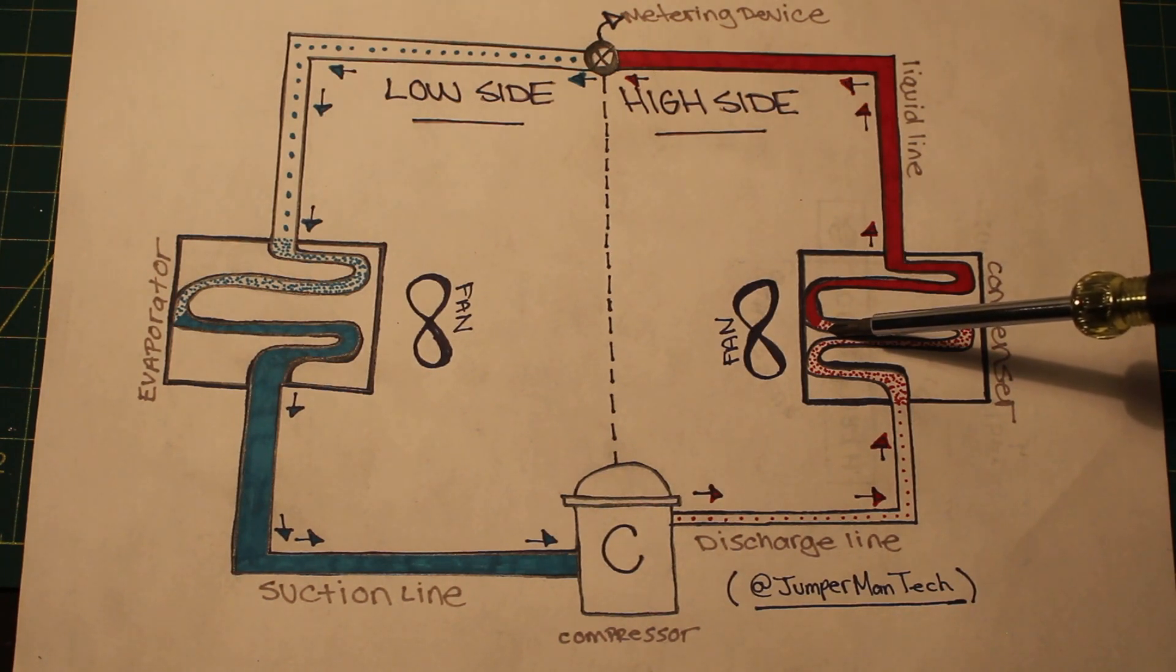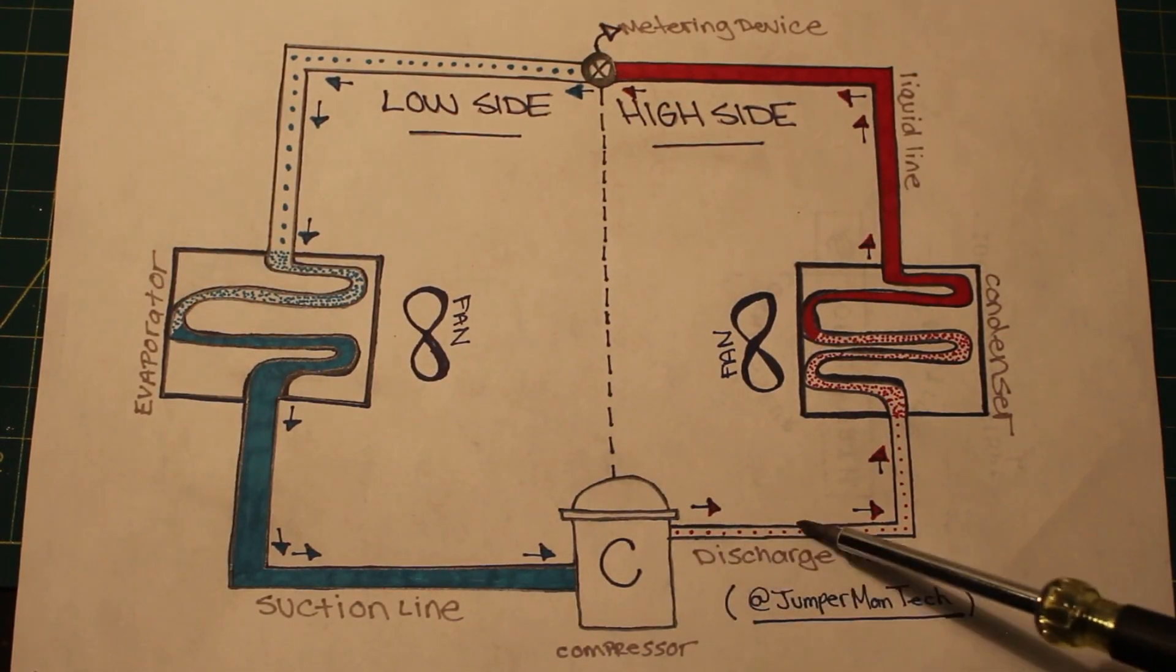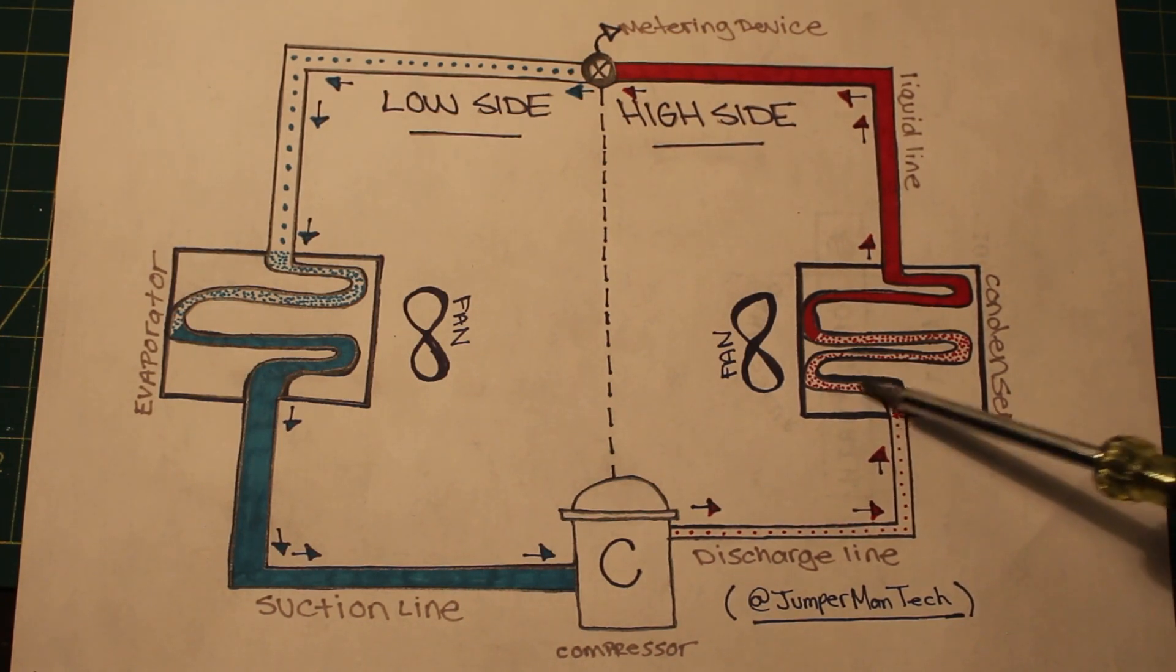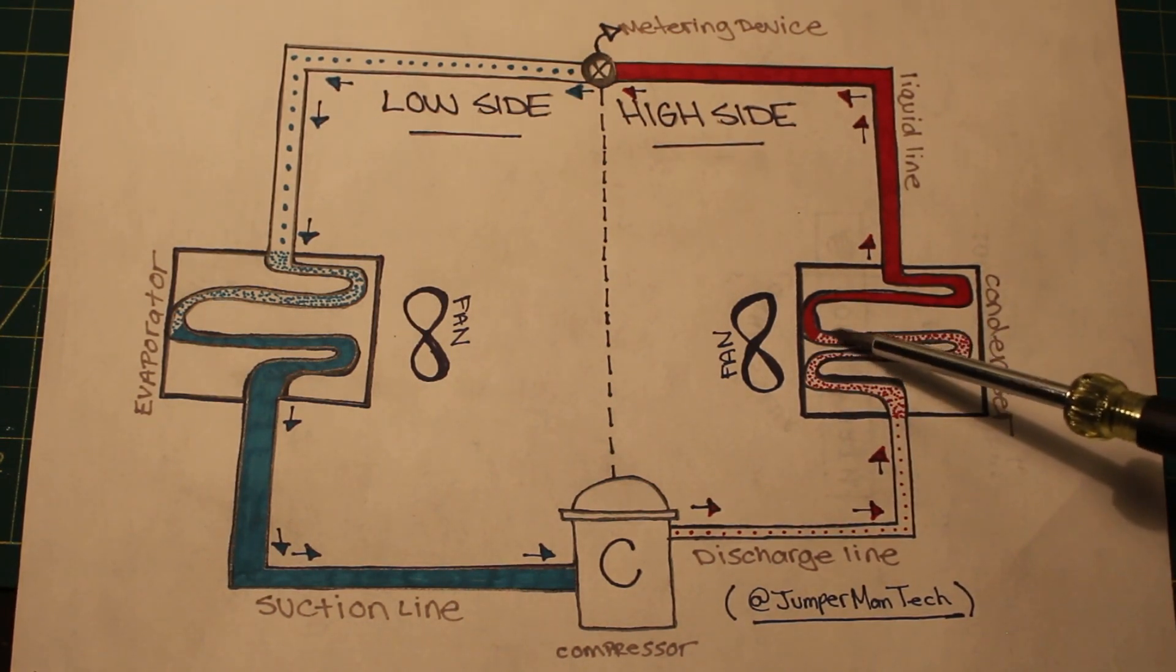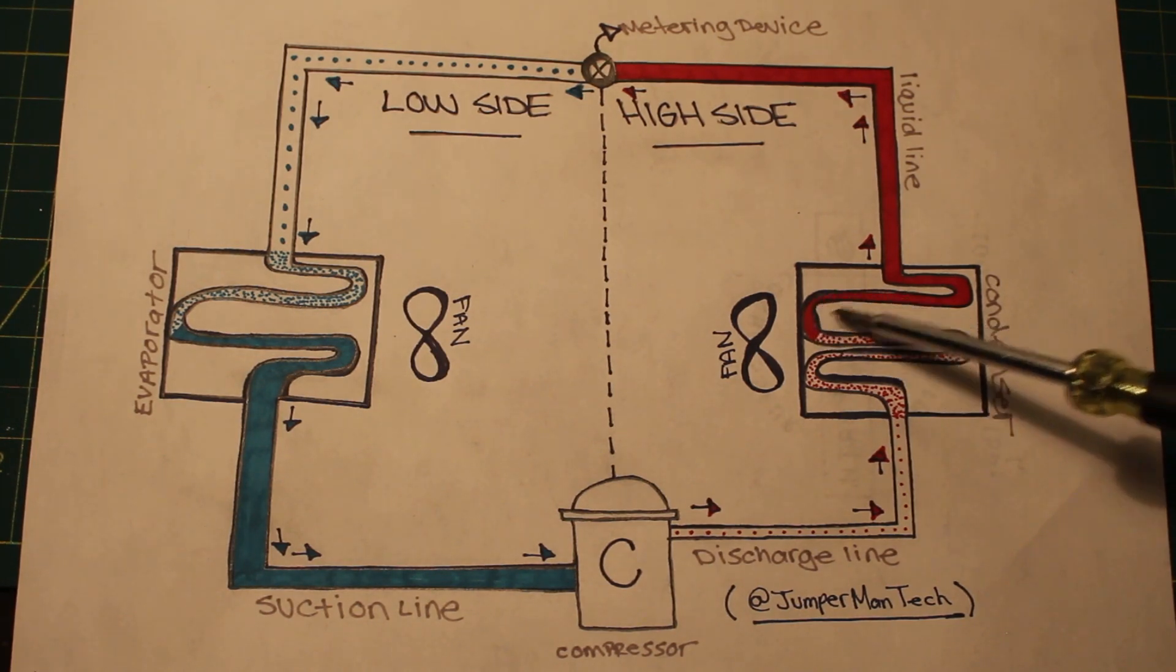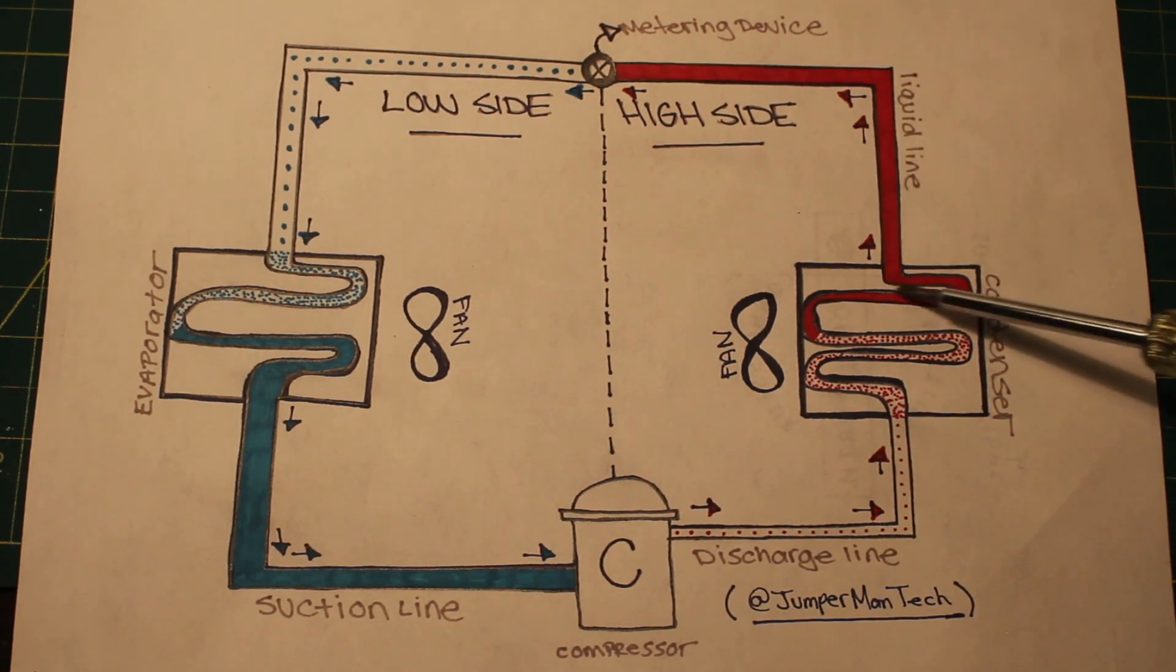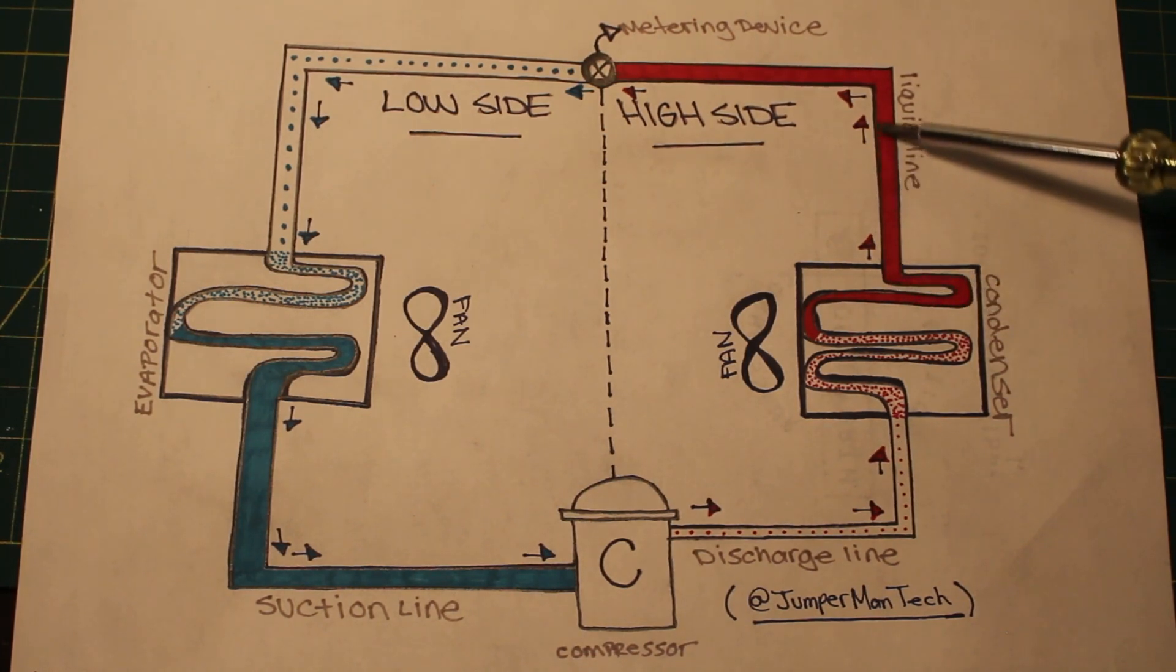Heat is rejected in our condenser. So in this diagram, these little red dots represent vapor. As we enter our condenser, you can see it starts getting more condensed. About halfway through the coil, once you see the solid color, this is where we change state from a vapor into a solid liquid. That is what the solid red color stands for.